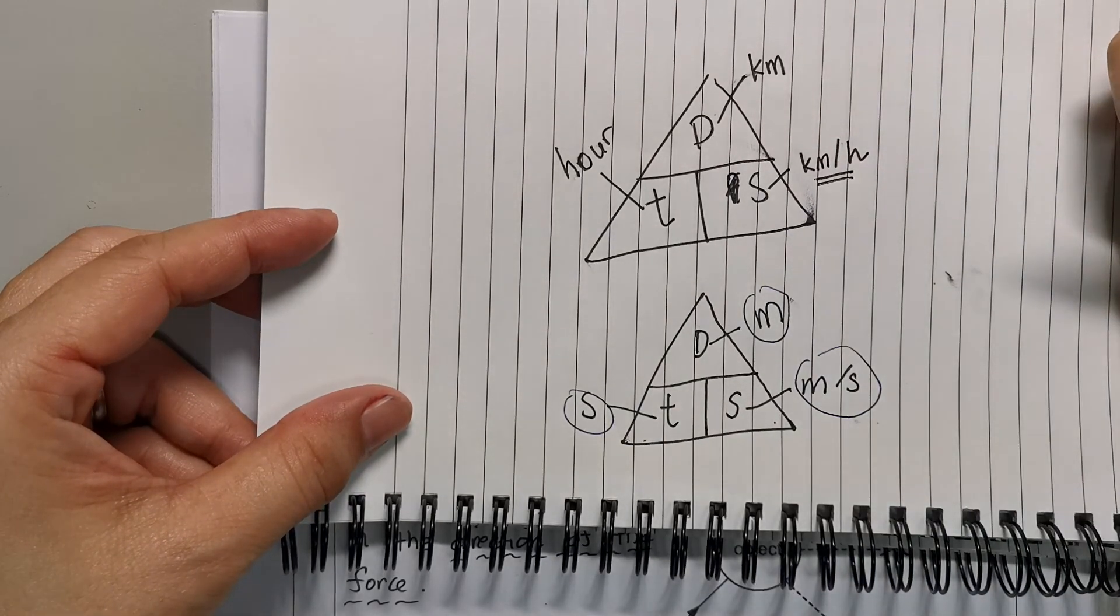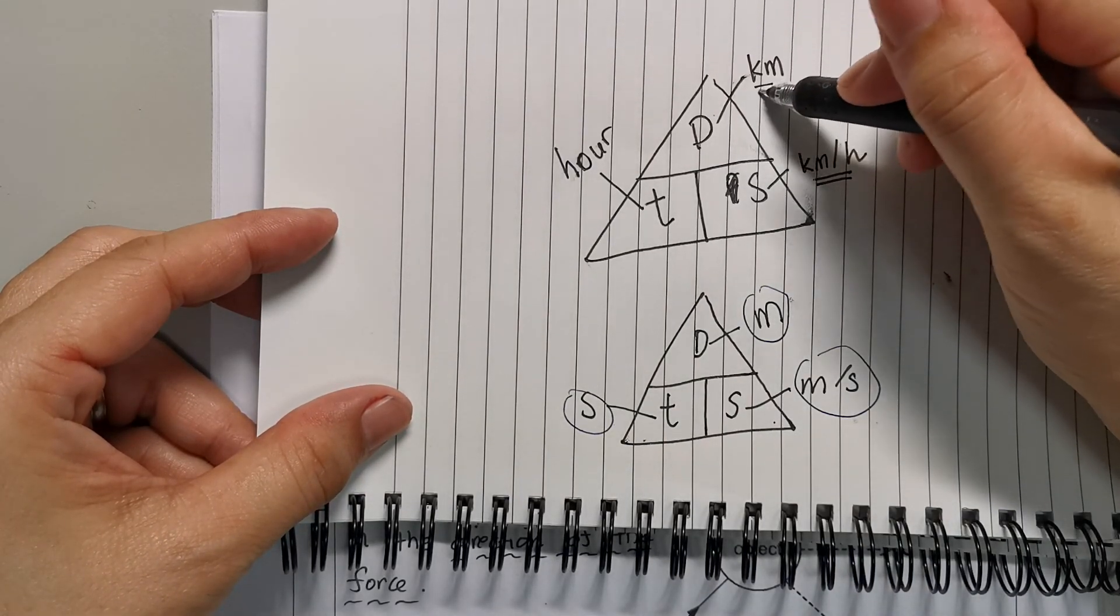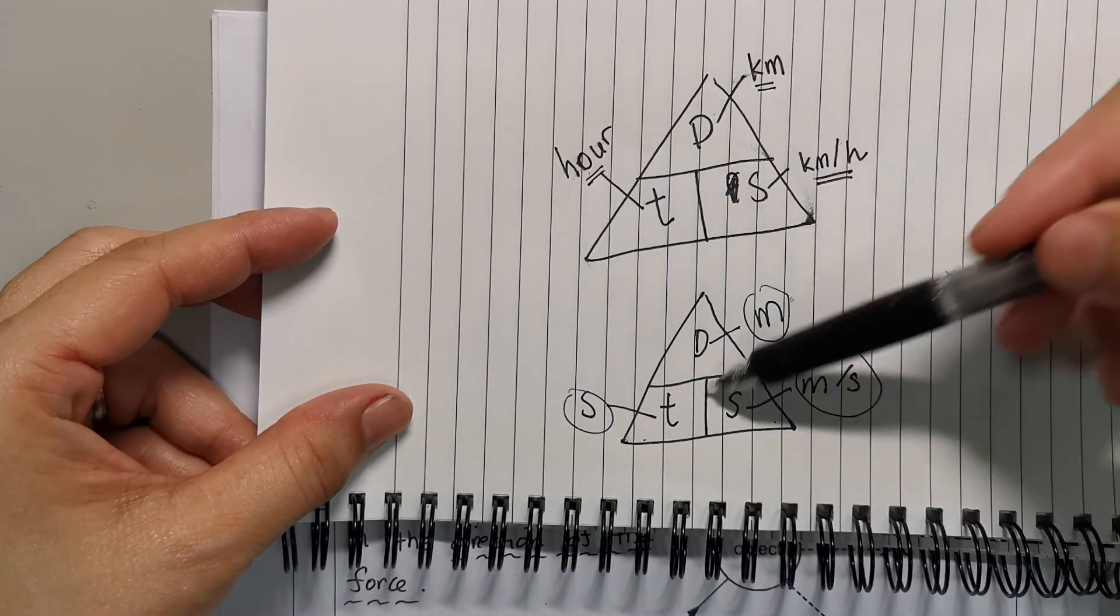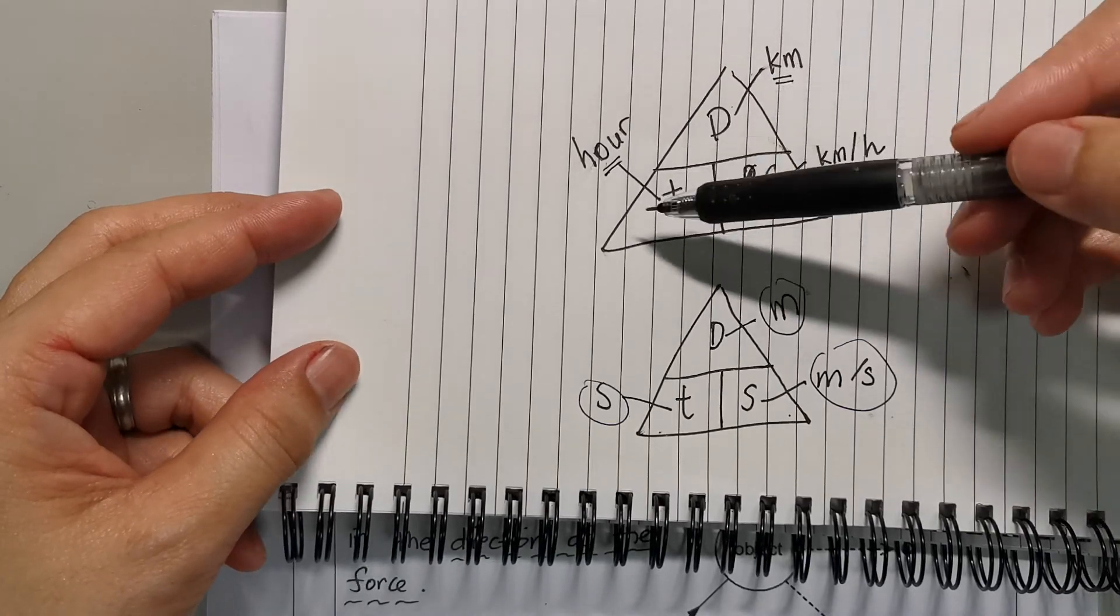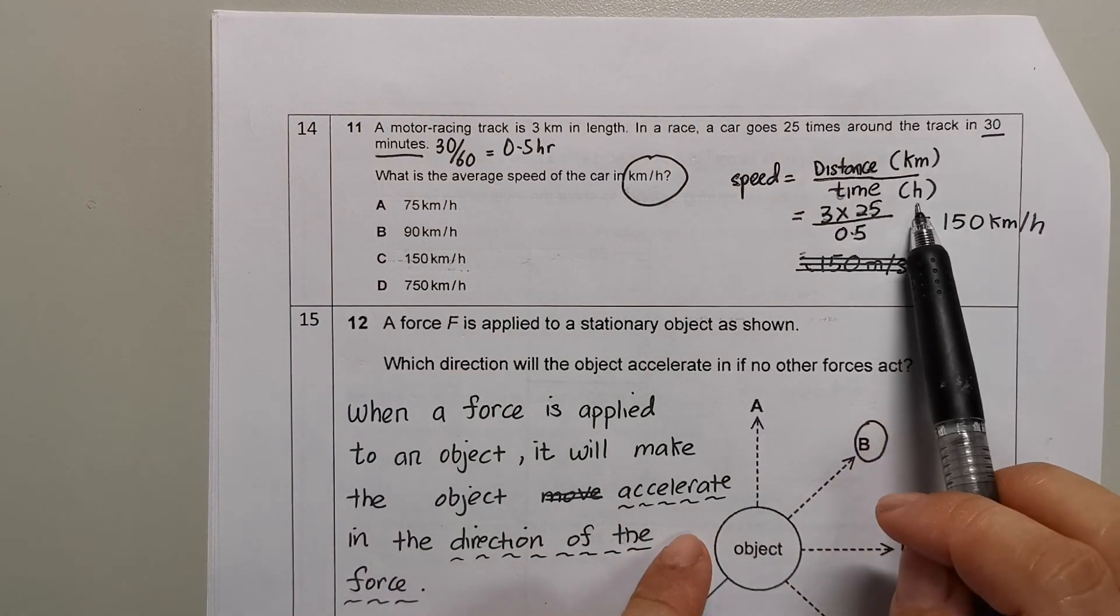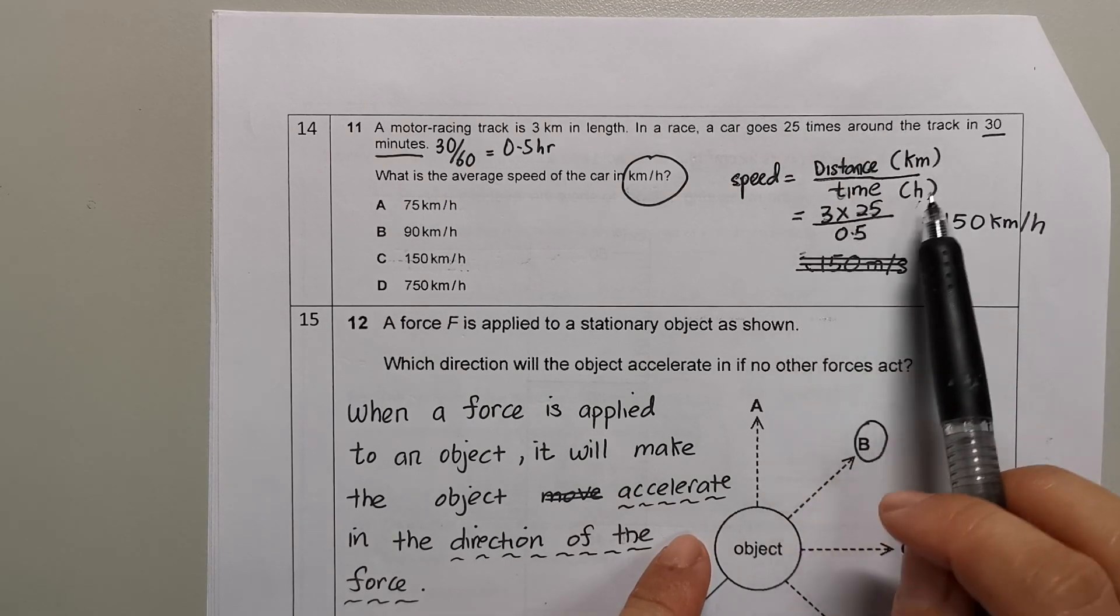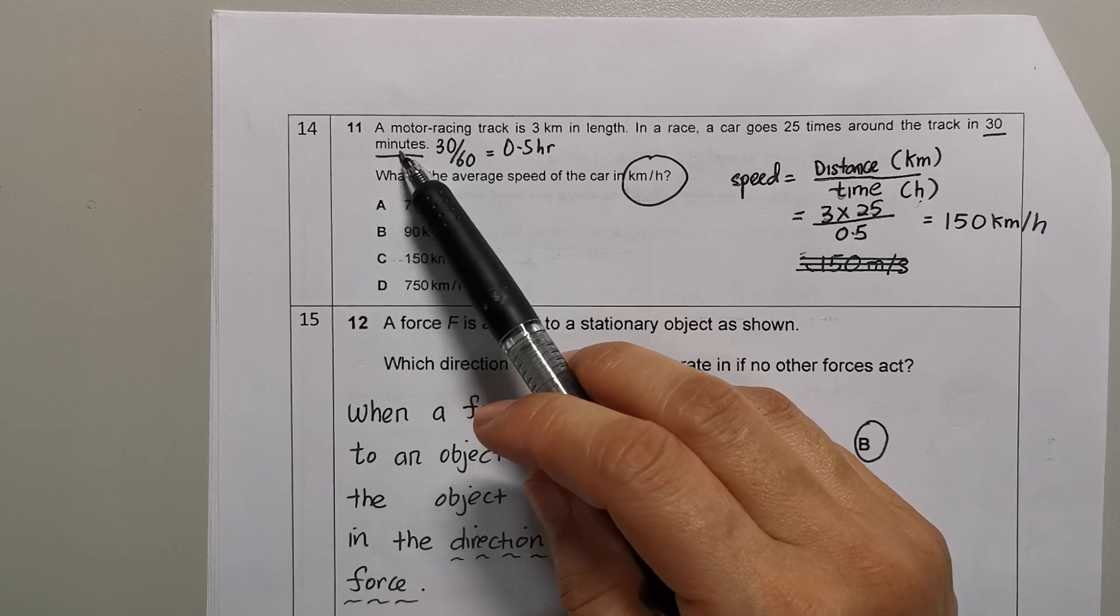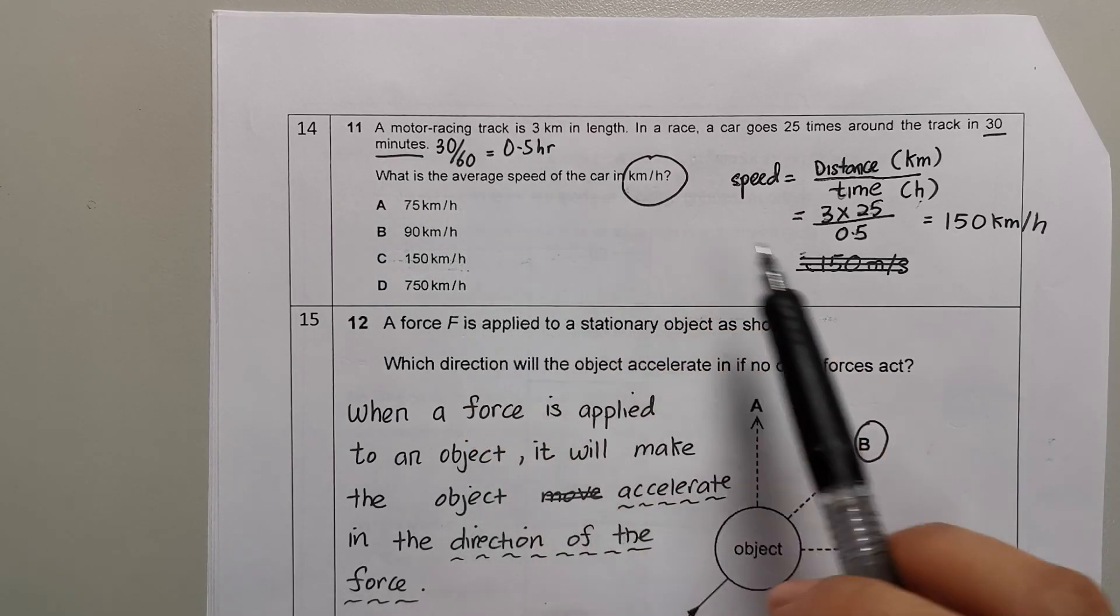...kilometers per hour, make sure the distance is in kilometers and the time is in hours. You cannot mix the units. So the distance must be in kilometers, the time must be in hours. So this is in kilometers, this is in hours, so I need to change 13 minutes to hours. Minutes to hours, you divide by 60.